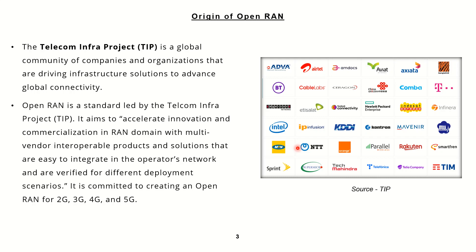They are collaborating to produce new products and solutions which are interoperable across the board, and by having more innovation in this domain, they can produce new services which are easily available for any operator to use. There are other important communities working towards evolving the overall Open RAN ecosystem, such as the ORAN Alliance and the Small Cell Forum — we'll talk about them in the subsequent slides.